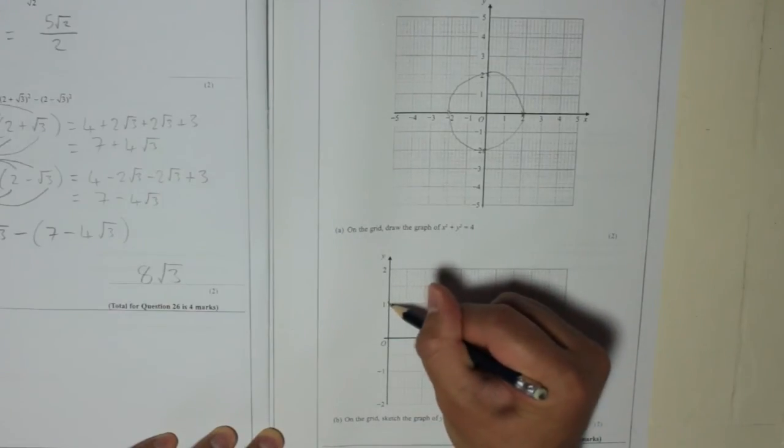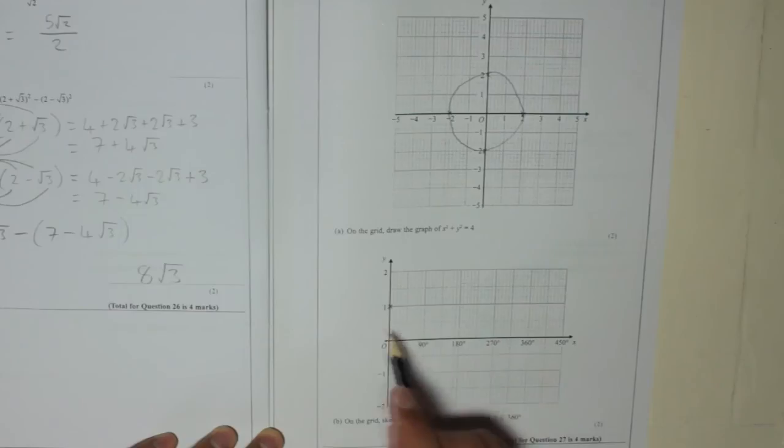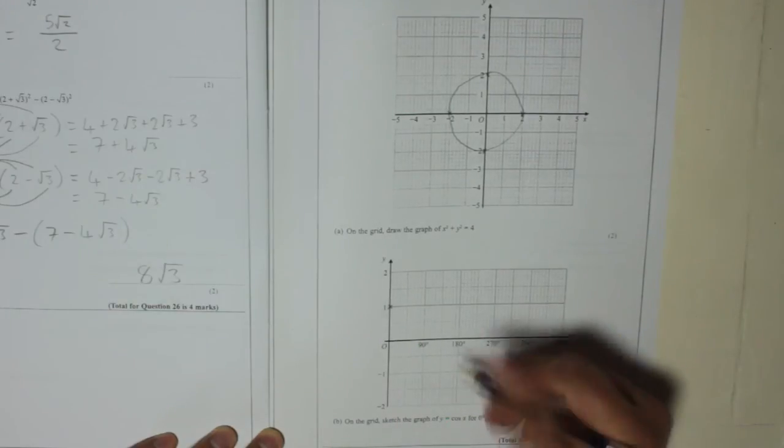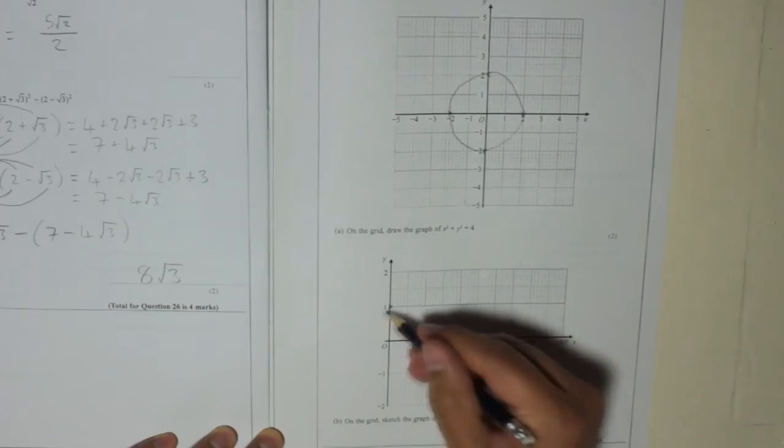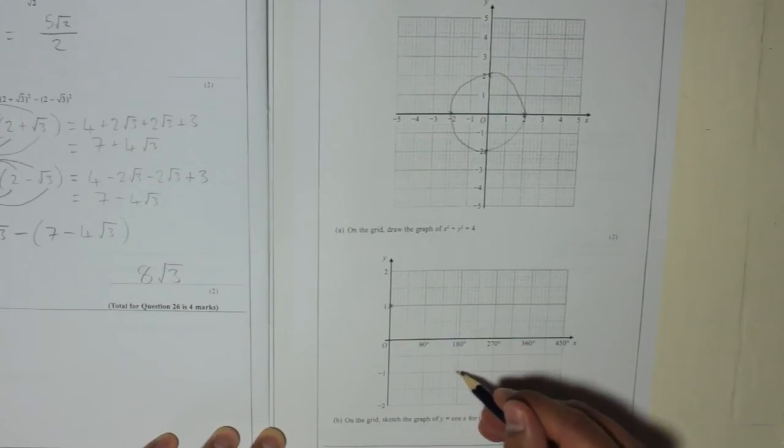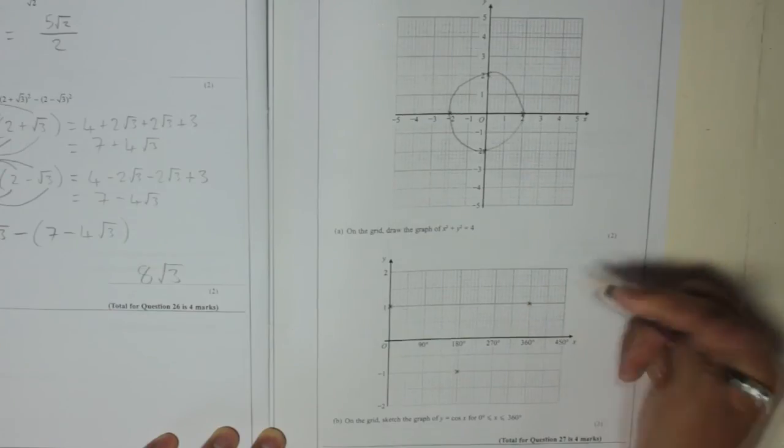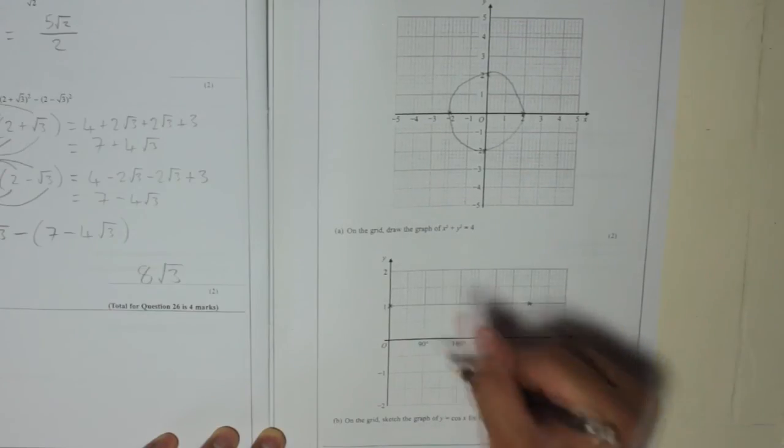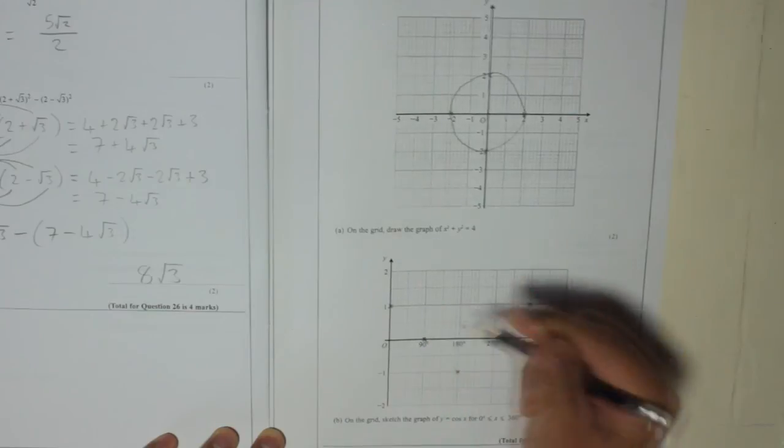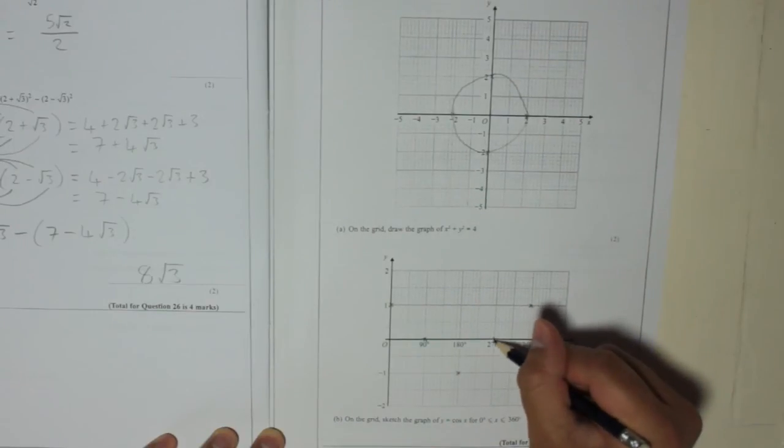It starts at 1, there, and it goes down at 180. So that's where it meets its minimum value. And then it comes back up again to get to the top at 360. It crosses in between these points at 90, so it hits that there, and it'll hit the x-axis at 270.